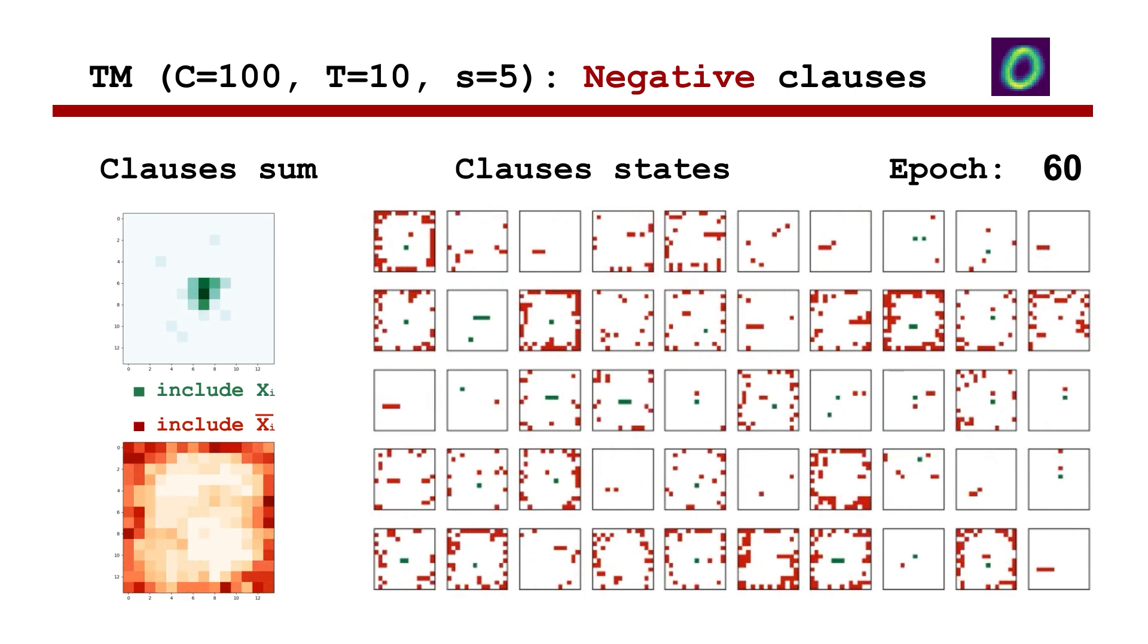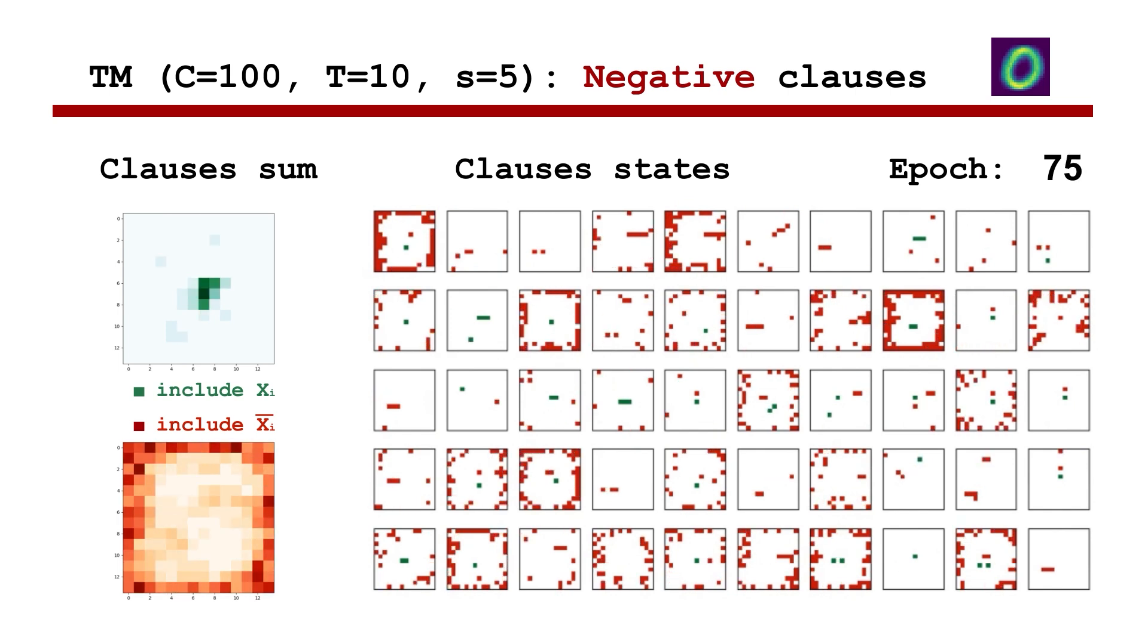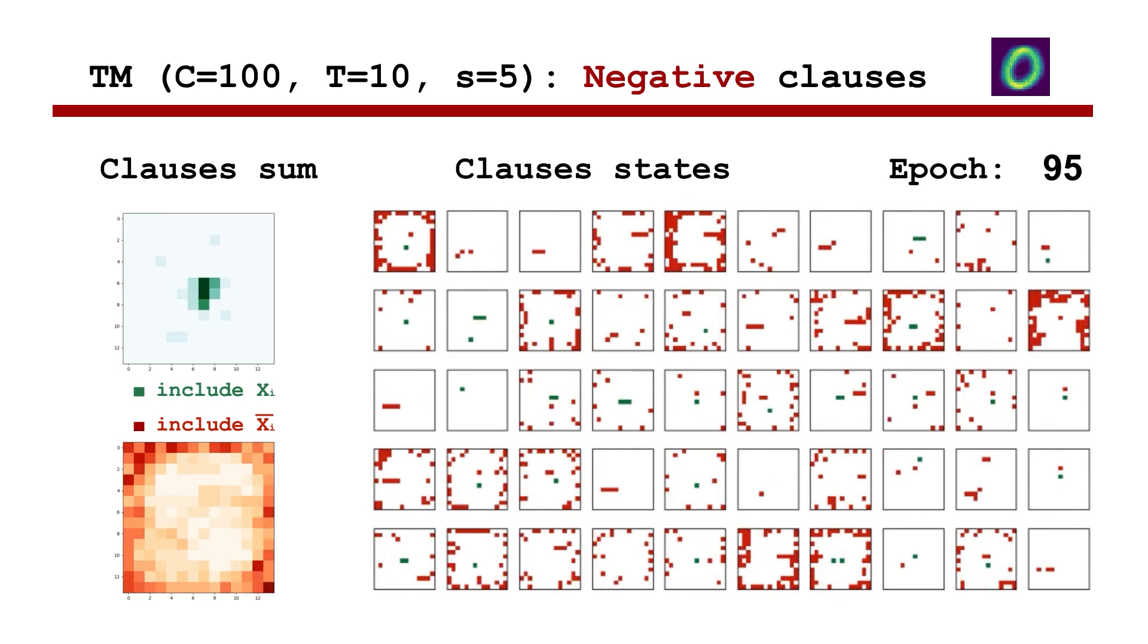Ultimately, this video shows that explainability is one of the key benefits of the Tsetlin machine due to using propositional logic clauses, which can be easily interpreted and visualized.